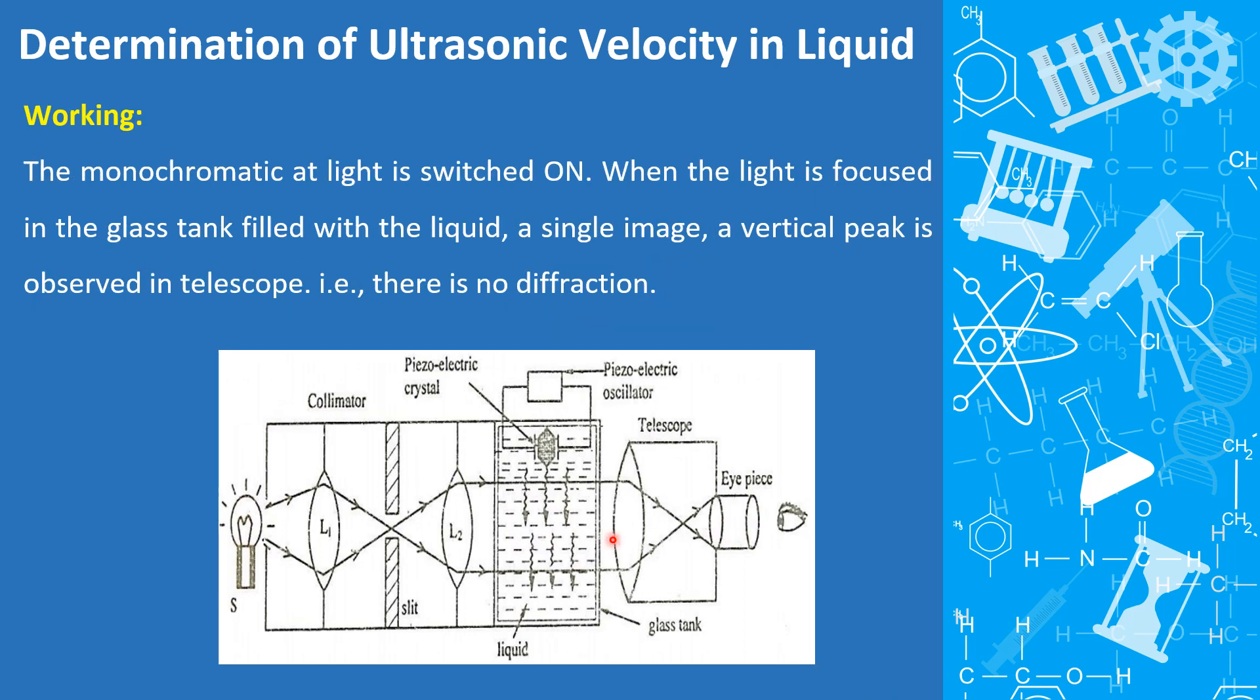Working: The monochromatic light is switched on. When the light is focused in the glass tank filled with liquid, a single image, a vertical peak is observed. There is no diffraction.